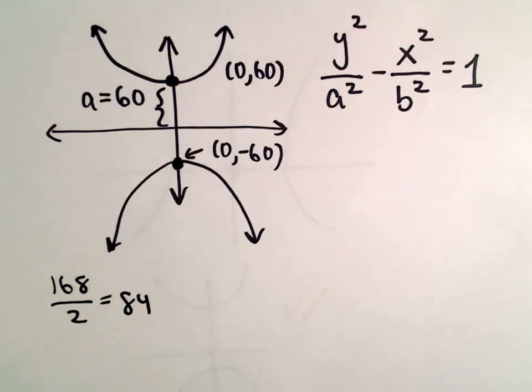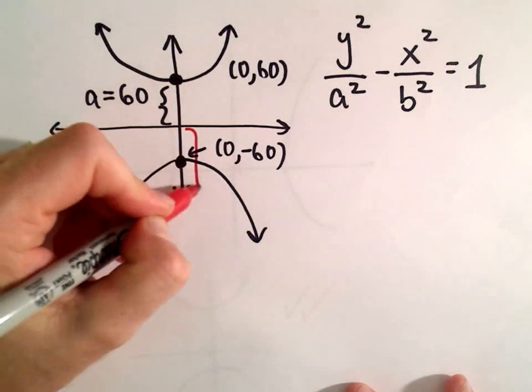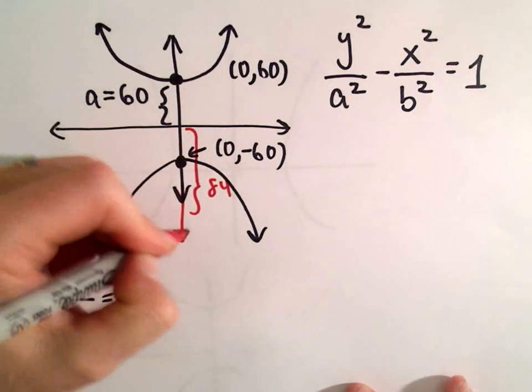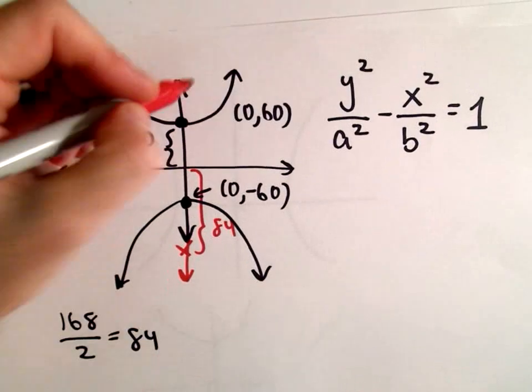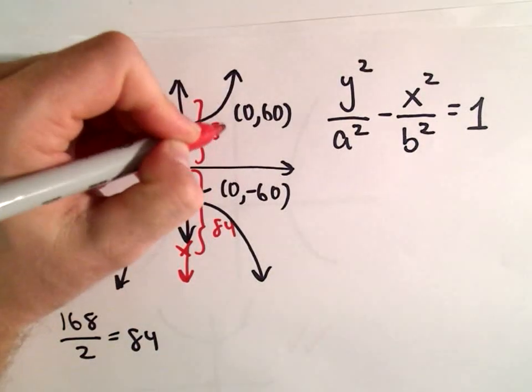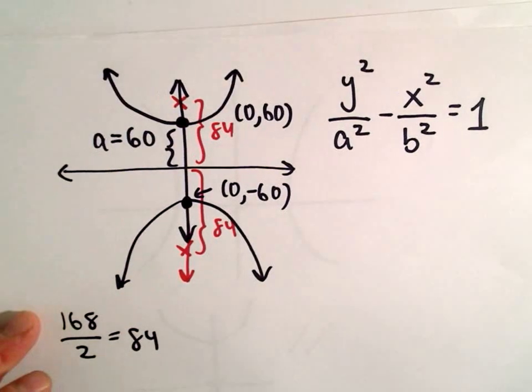So that tells me, from the center, if I go down 84 units, I'm going to be sitting at one of my foci. And likewise, if I go up 84 units, I'm going to be sitting at another one of the foci.